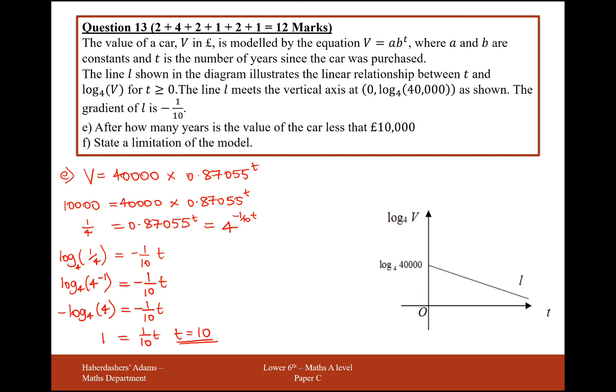Final question, question F, state a limitation of the model. So I'm just going to read out what the mark scheme suggests. Acceptable answers include the model is not necessarily valid for large values of t, so that's referring to as cars get older and older, they generally start to increase in value if they're well maintained. In addition, the value of the car is not necessarily just related to age. It's the manner in which the owner has kept the car. If they've kept it well, then that will increase the value of the car, keep it in service, etc. All of you A-level students will know that, and the mileage will also affect the value of the car as well. So when you're looking to buy cars, everyone, be careful of the mileage, and don't just use a log-based model. So you just need one of those examples there just for the one marker for part F. Great, that's 12 marks and we've finished paper C now. Thank you.